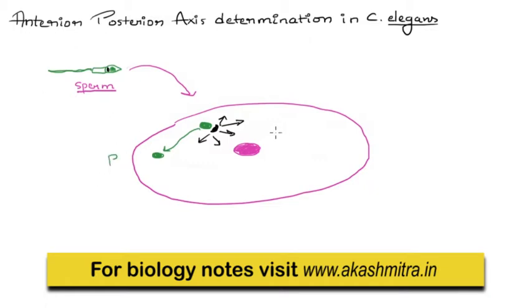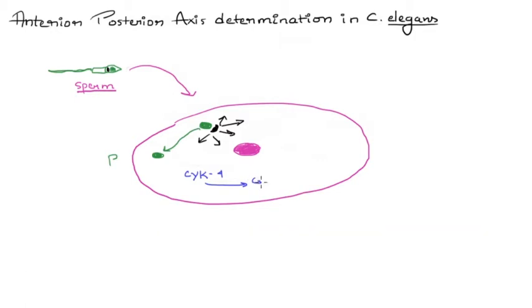The sperm not only gives in the pronucleus and the centriole, it also gives in another protein which is called CYK4. This CYK4 activates a GTPase inside the egg. This GTPase activates microfilaments.